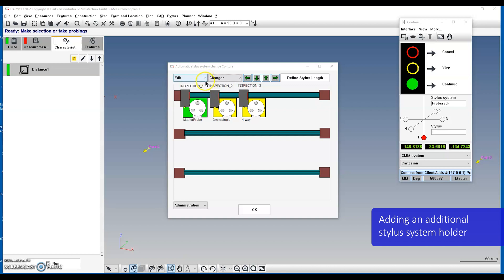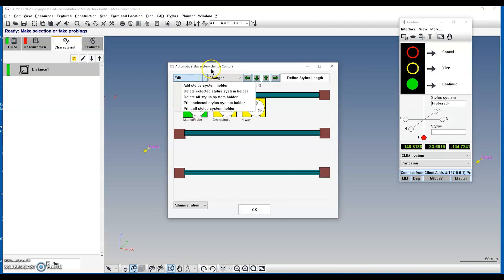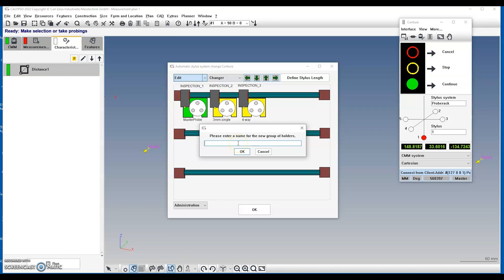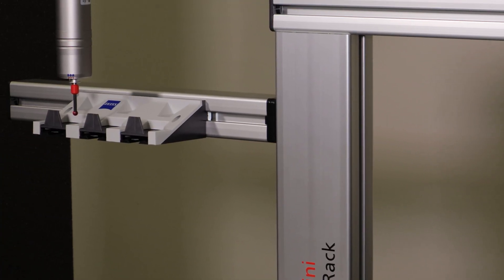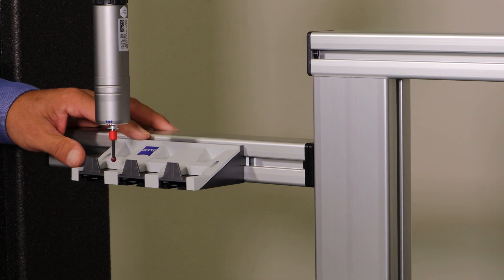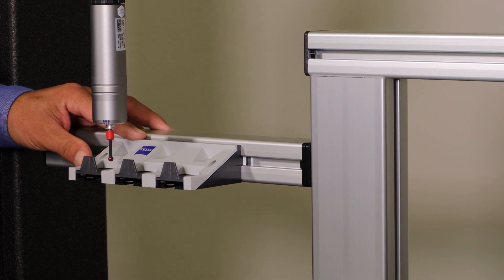To add an additional stylus system holder, simply go to CNC stylus system change, click on the dropdown by edit, choose add stylus system holder, select XXT for the holder type, and enter a name for the new holder group. You can repeat this process for each additional probe stylus changer you have on the rack.